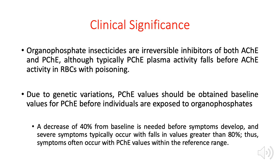Workers who spray insecticides should have baseline pseudocholinesterase or acetylcholinesterase measured before starting work. A decrease of 40% from the baseline is needed before symptoms develop. Even if values are within normal range, a 40% drop from baseline will cause symptom manifestation. Severe symptoms develop if values drop more than 80% from baseline.